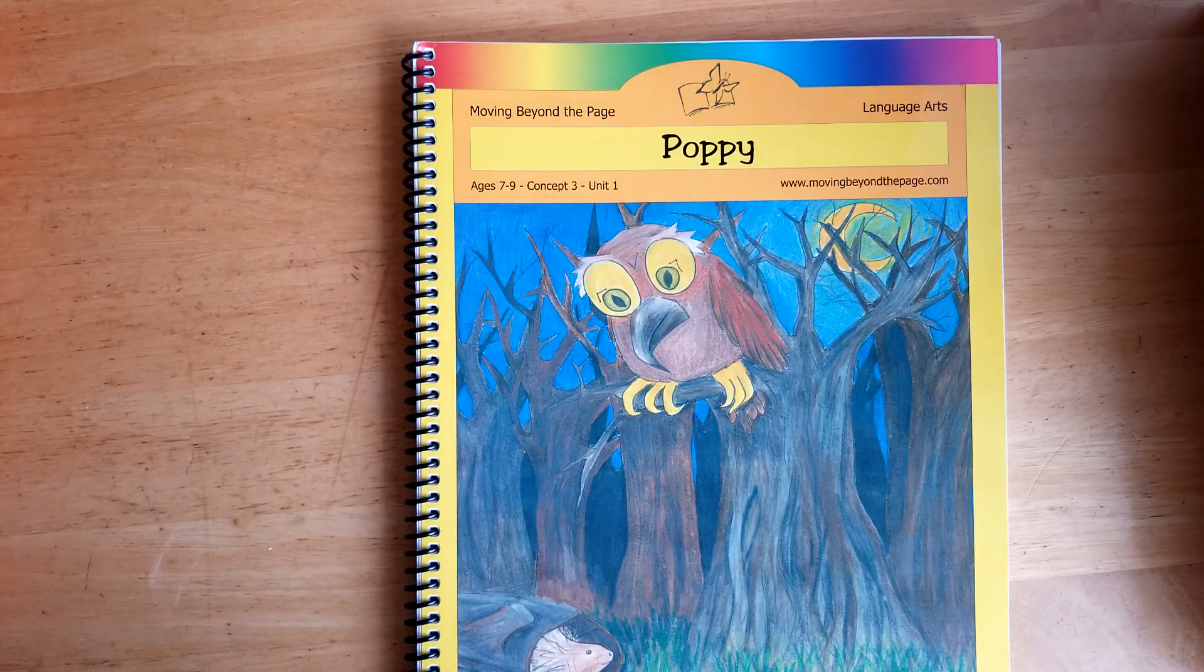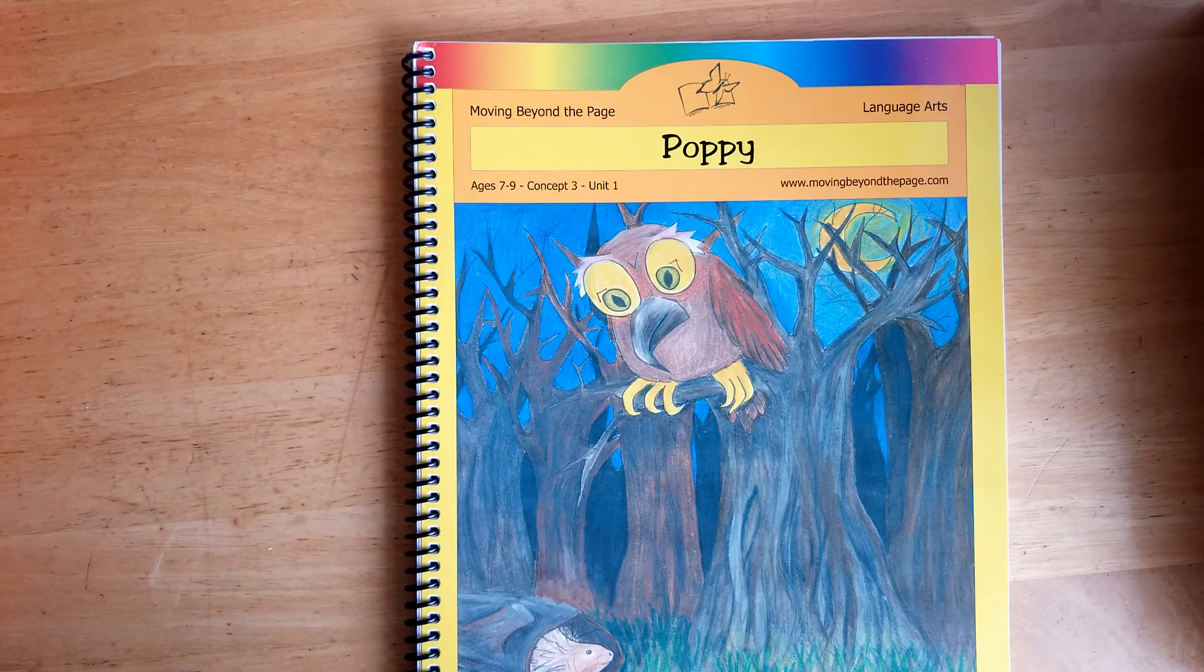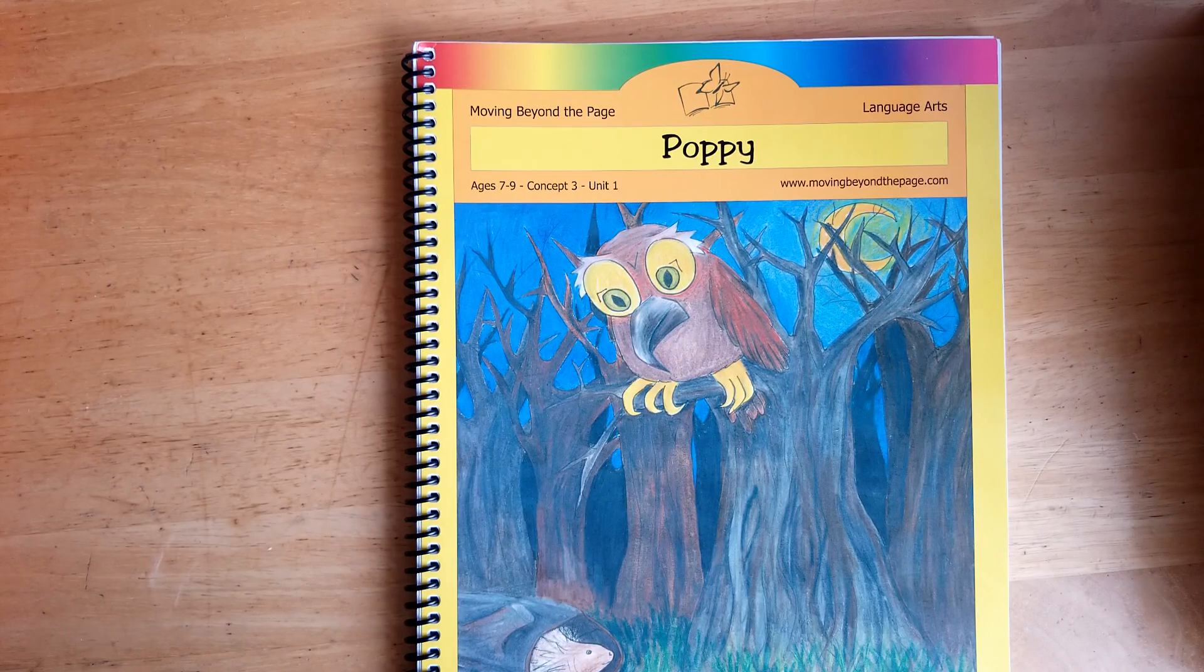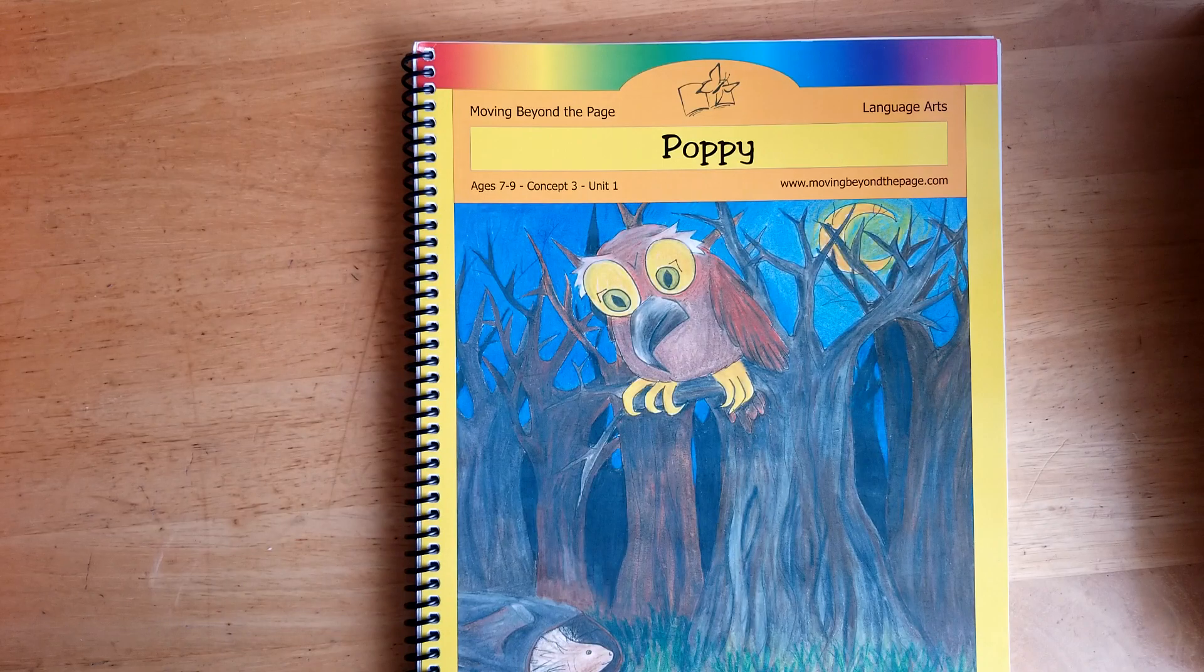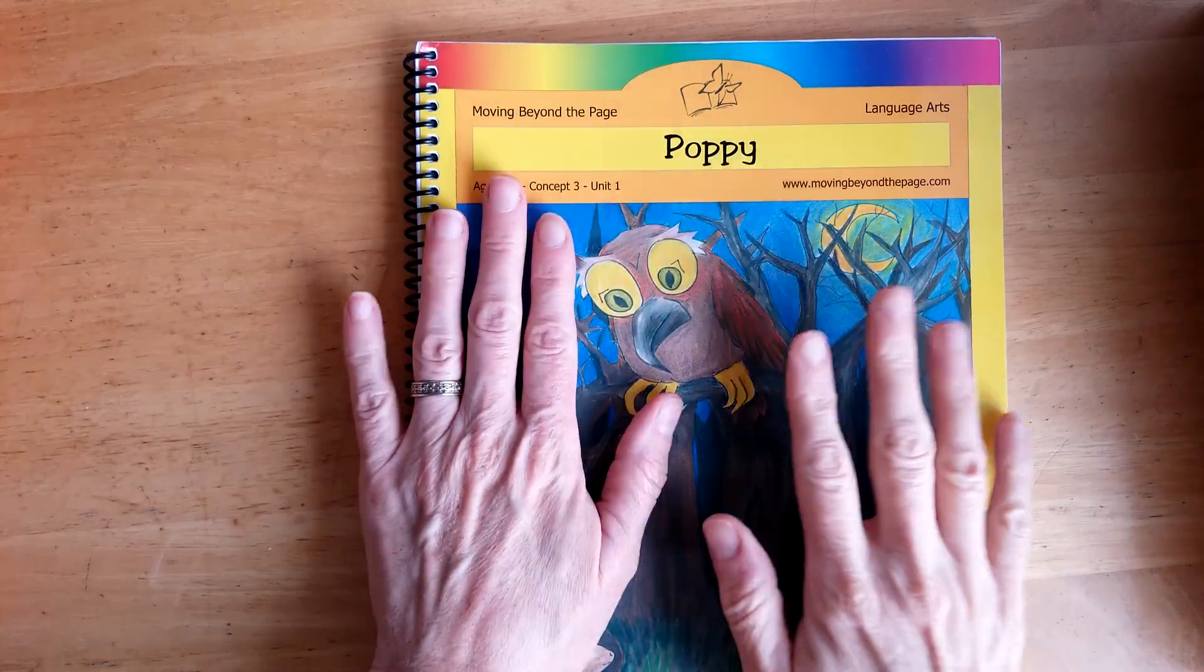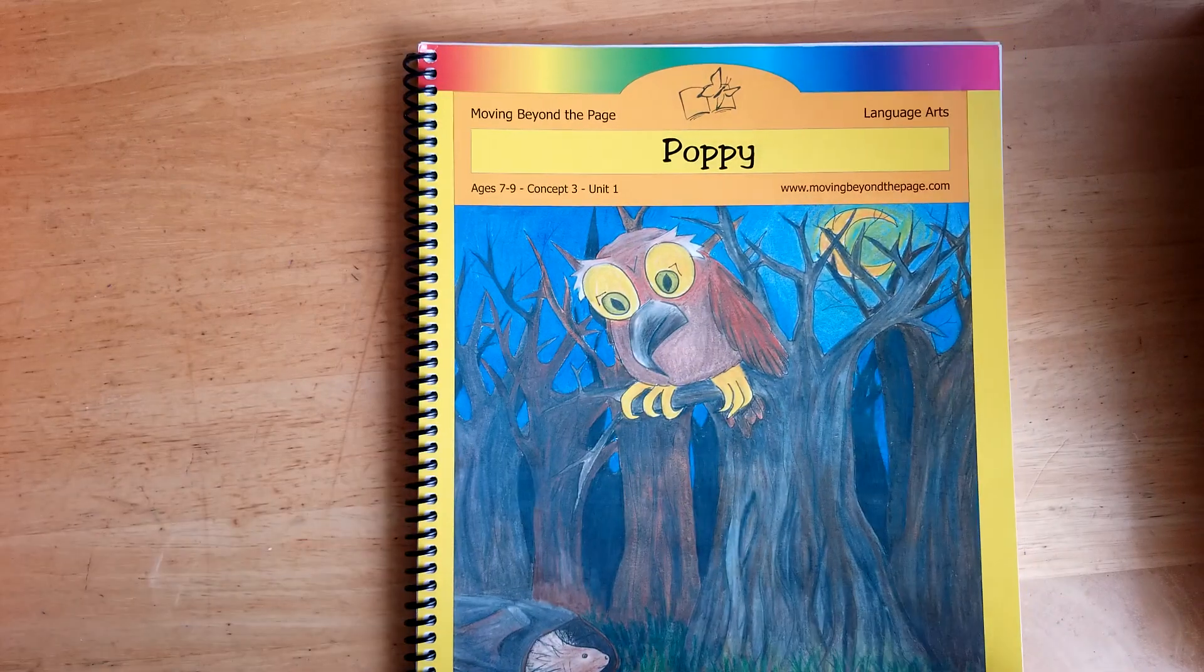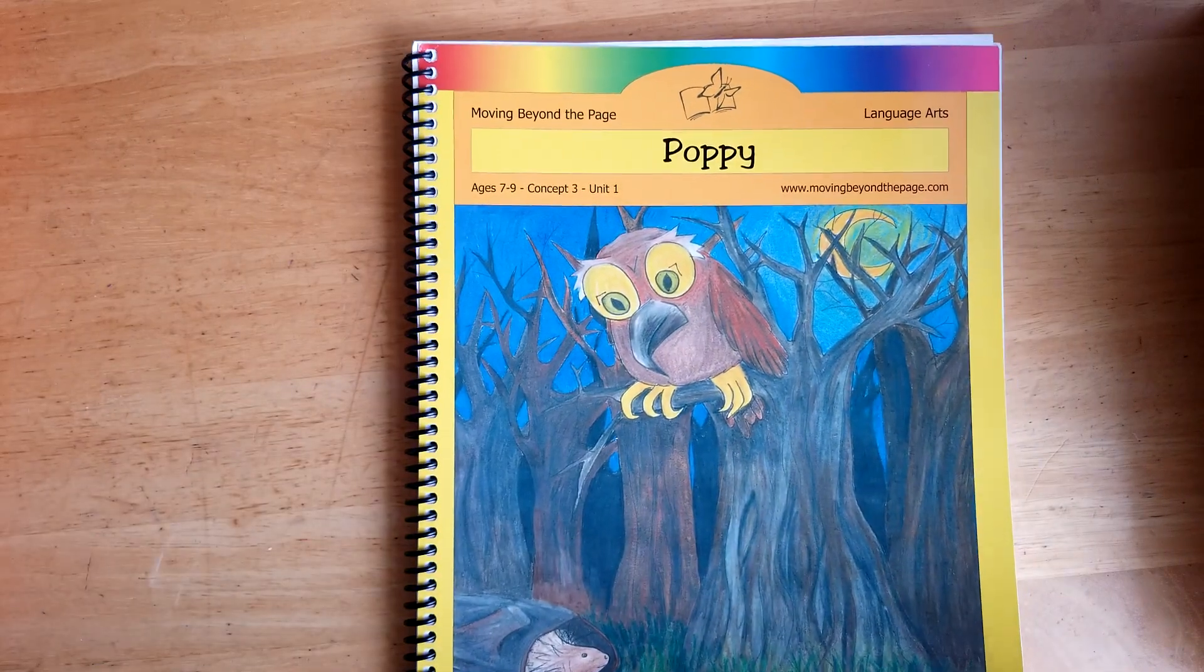Hi, this is Heather from Heather's Homeschool, and today I'm going to go over one of the Moving Beyond the Page units. It's a language arts unit and it goes along with the book Poppy. So this unit is called Poppy and the book is by Avi. We really enjoyed this book.